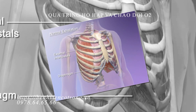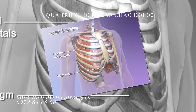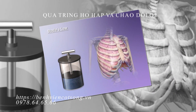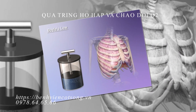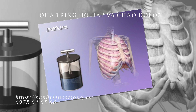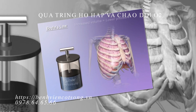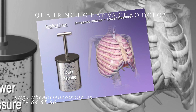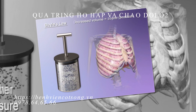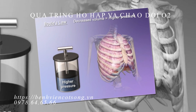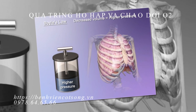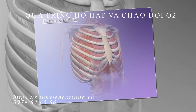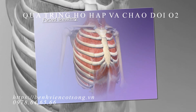During normal exhalation, the muscles relax, the lungs become smaller, pressure inside them rises, and air is expelled. Boyle's Law explains this relationship between volume and air pressure: an increase in the volume of a container lowers the pressure of the air inside, while a decrease in volume raises pressure in the reduced space.